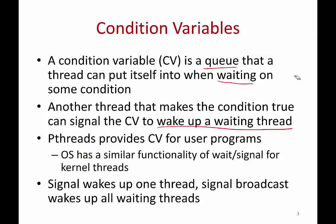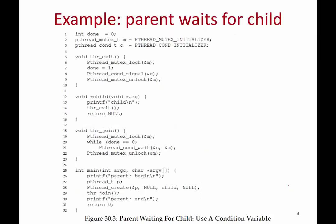pthreads provides condition variables, and the operating system also has similar functionality for kernel threads. Sometimes a process in kernel mode might want to wait for another event, and another process might want to signal it. On a condition variable you can have two kinds of signaling: a simple signal can wake up just one thread, while a broadcast wakes up all threads that are waiting on the condition.